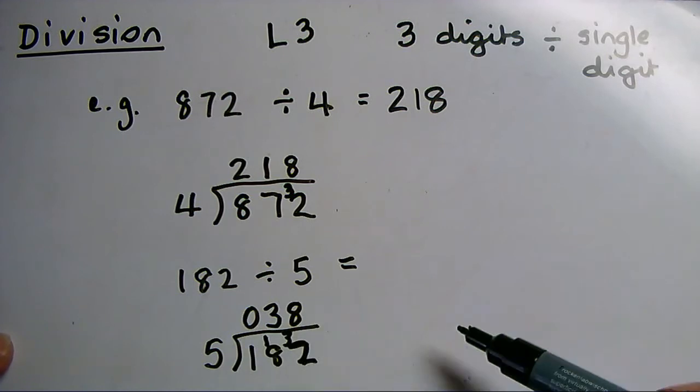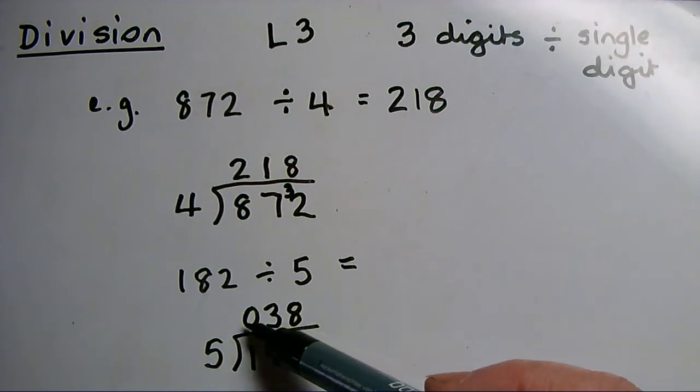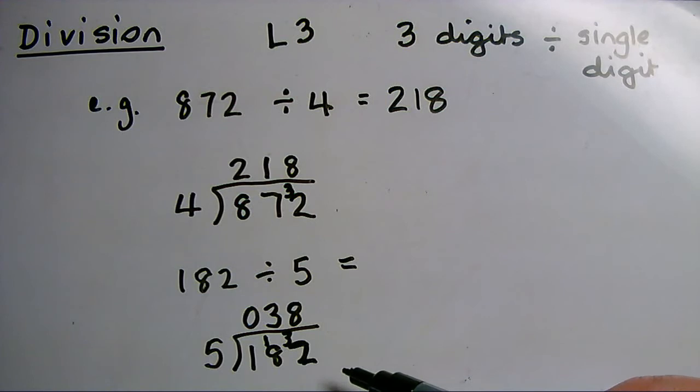I can interpret the answer as 38, but it's important that I write the 0 on the front at this level so that I'm clear what I've done and how I'm working out the sum. Still at this stage we don't have any remainders at the end of the sum.